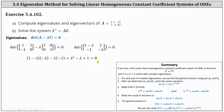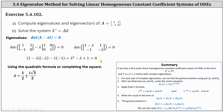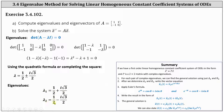This is not factorable, so to solve for lambda we apply the quadratic formula or complete the square. This gives us lambda equals one half plus or minus i square root three divided by two. So we have lambda sub one equals one half plus i square root three divided by two, and lambda sub two equals one half minus i square root three divided by two.